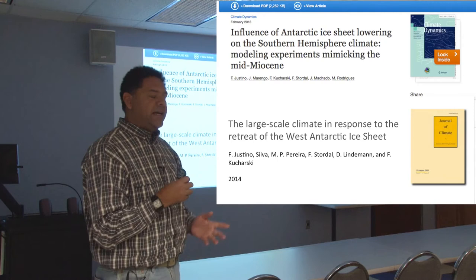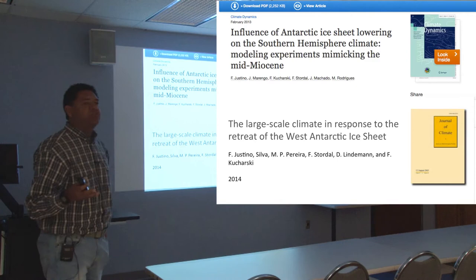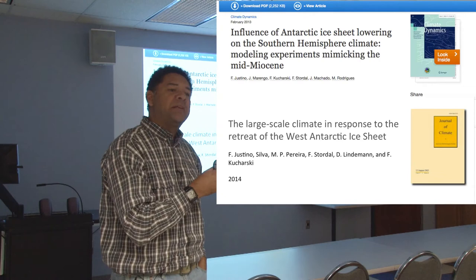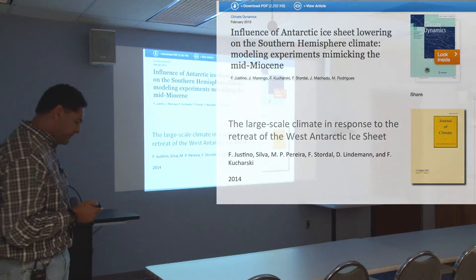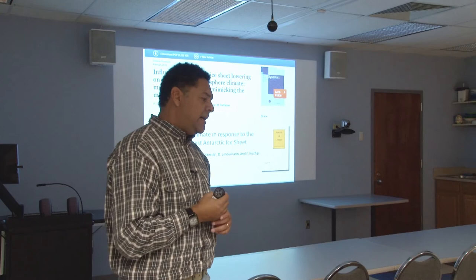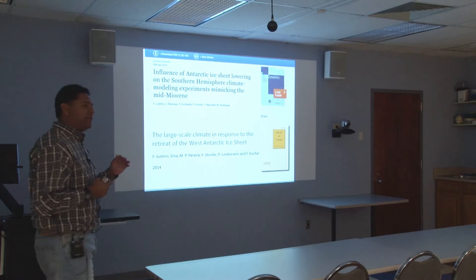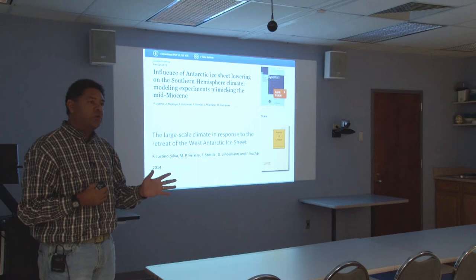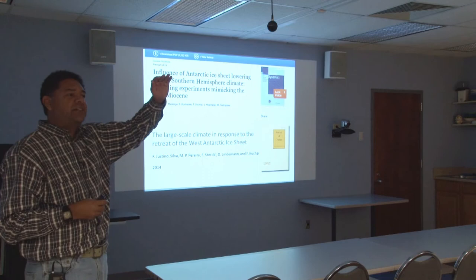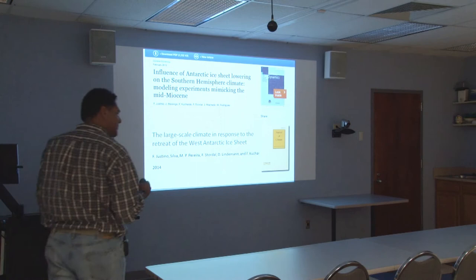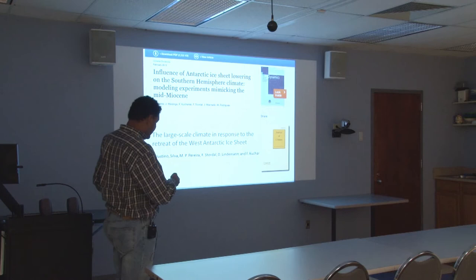Since then, I have done some experiments with coupled models, but with simplified coupled models. In 2012, some papers appeared with reconstructions of Antarctic topography for different time slices in the past. What we did first was try to simulate the mid-Miocene climate based on a very hypothetical topography file. Some reconstructions argue that the Antarctic topography, something like between 20 and 70 million years ago, was between 25 and 30 percent less than present day. So in this paper, we just reduced the height of the Antarctic ice sheet by 25 percent and simulated for 1,000 years with a global climate coupled model.